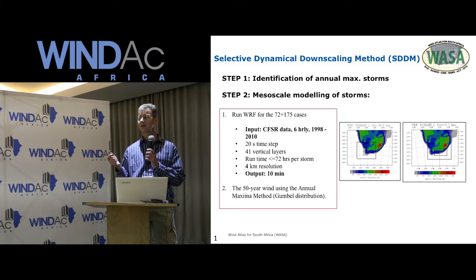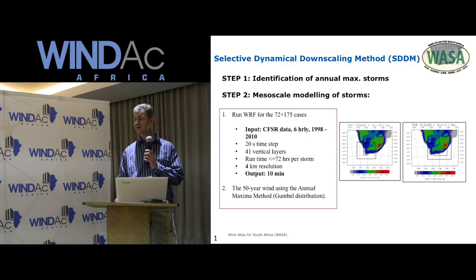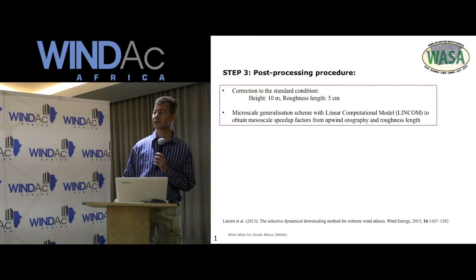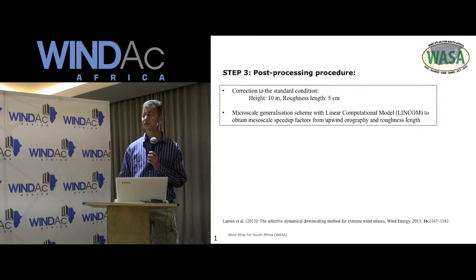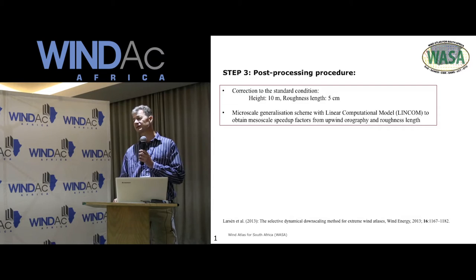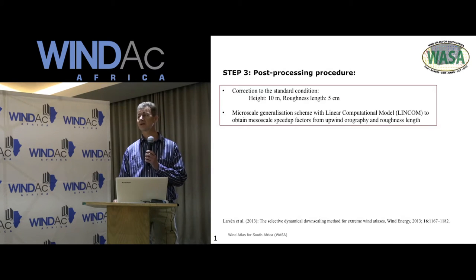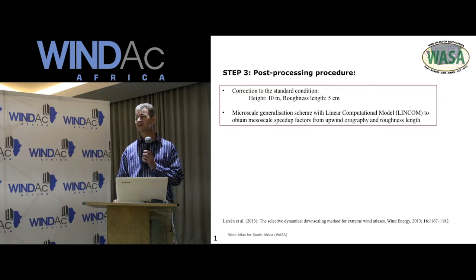We then calculated the 50-year wind using the annual maximum method or Gumbel distribution. A post-processing procedure was applied to convert to standard conditions — a height of 10 meters and roughness length of 5 centimeters — and then a micro-scale generalization scheme with a linear computation model to obtain the meso-scale speed-up factors from topography and roughness length.